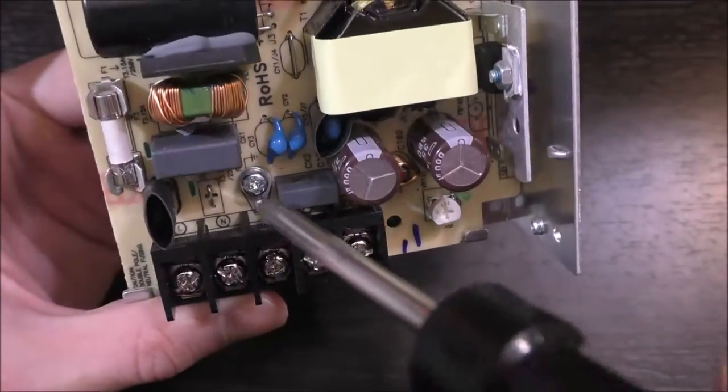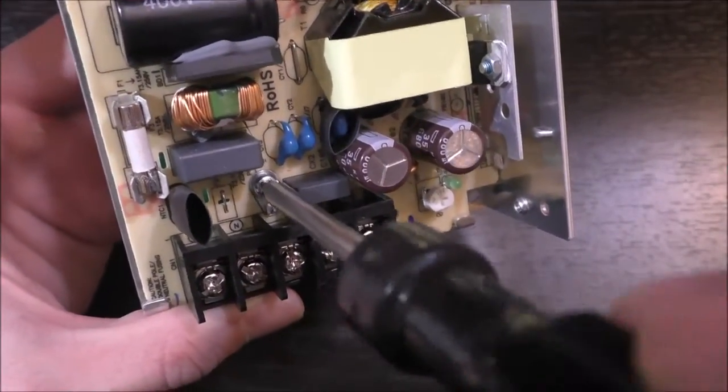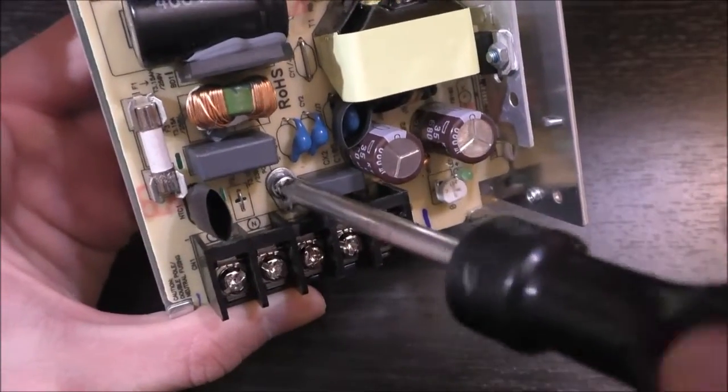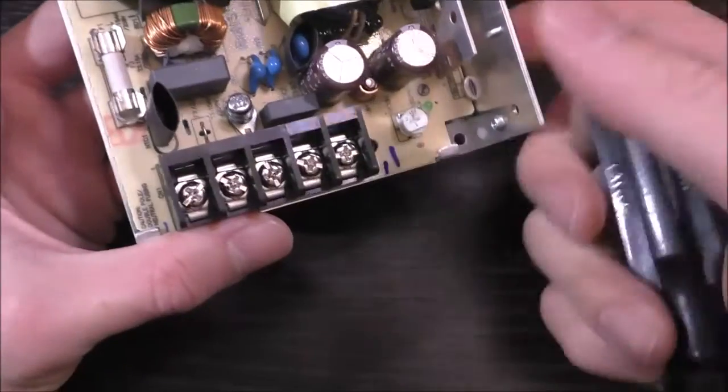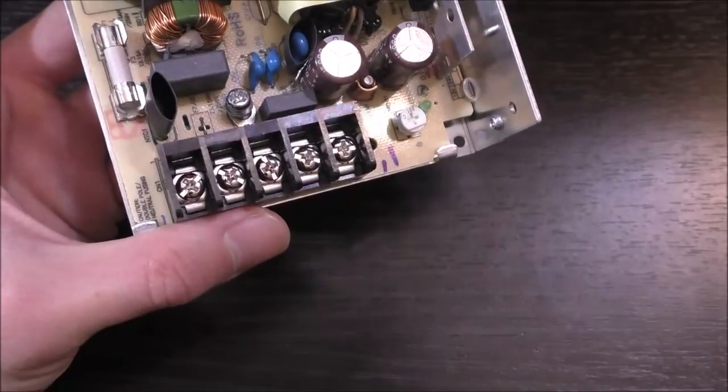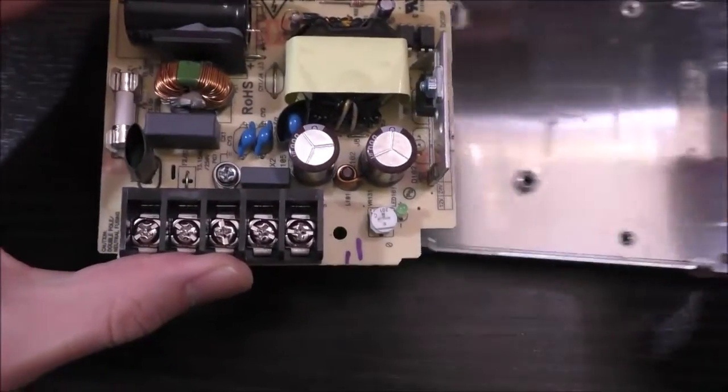So this is the ground terminal. And as you can see, they have a wire that comes out and it's screwed on with a lock washer. And this makes a positive contact with the metal case on the bottom side of the PCB, which we will soon see.